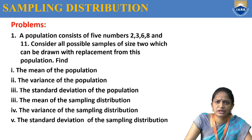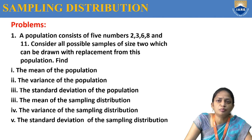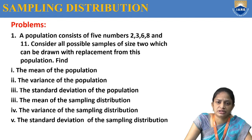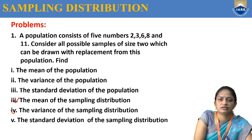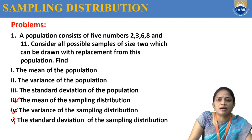The first problem: a sample consists of five numbers 2, 3, 6, 8, 11. Consider all possible samples of size 2 which can be drawn without replacement from this population. Find: first, mean of the population; second, variance of the population; third, standard deviation of the population; fourth, mean of the sampling distribution; fifth, variance of the sampling distribution; sixth, standard deviation of the sampling distribution.